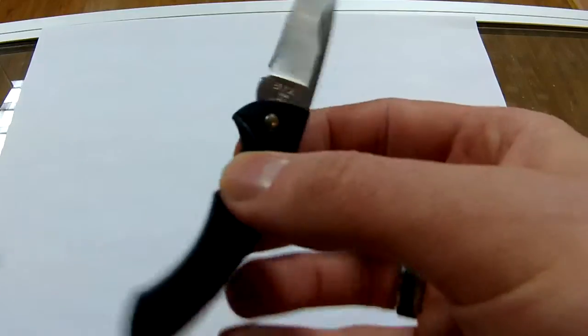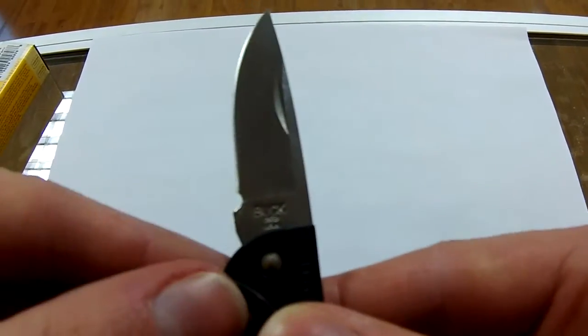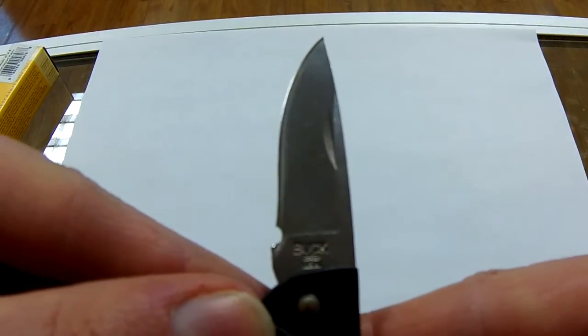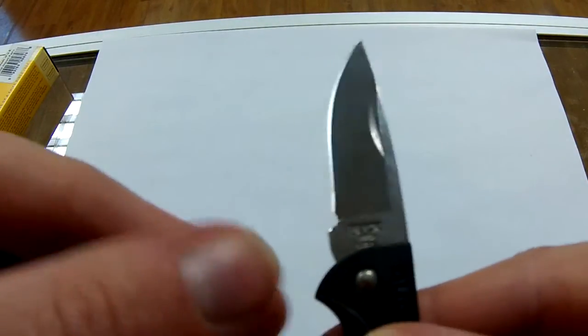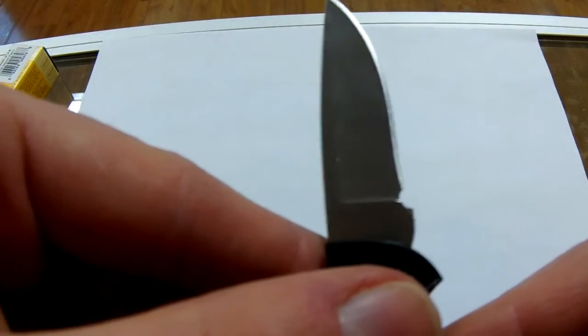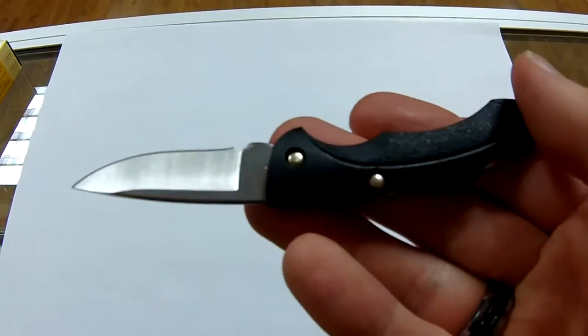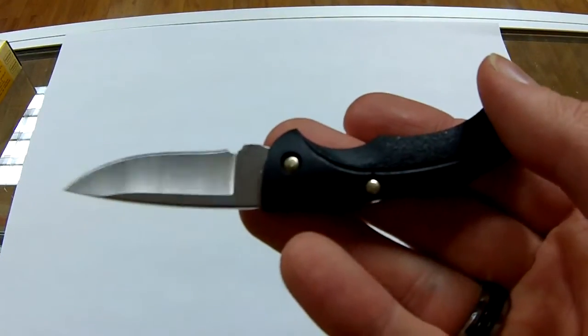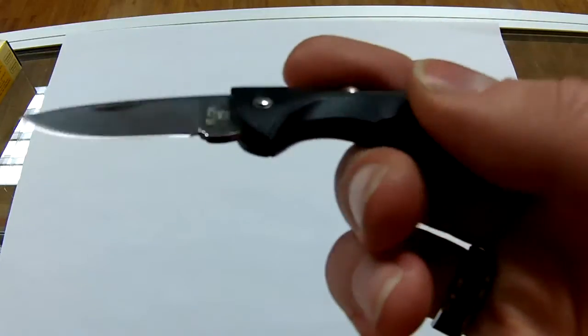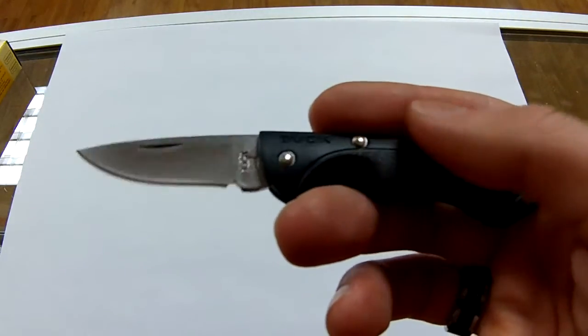Unfortunately the choice of the steel reflects that. Buck used 420J2 steel for this blade and from my limited understanding of blade steels this is not really that great. It's apparently not really intended to be blade steel so it has a low edge retention and it didn't really perform that well.